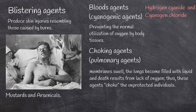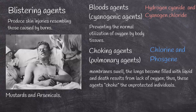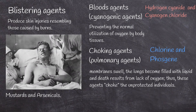Choking agents, or pulmonary agents, injure an individual mainly in the respiratory tract — in the nose, throat, and particularly the lungs. In extreme cases, membranes swell, the lungs become filled with liquid, and death results from lack of oxygen. Thus, these agents choke unprotected individuals. Chlorine and phosgene are the best known agents in this class.